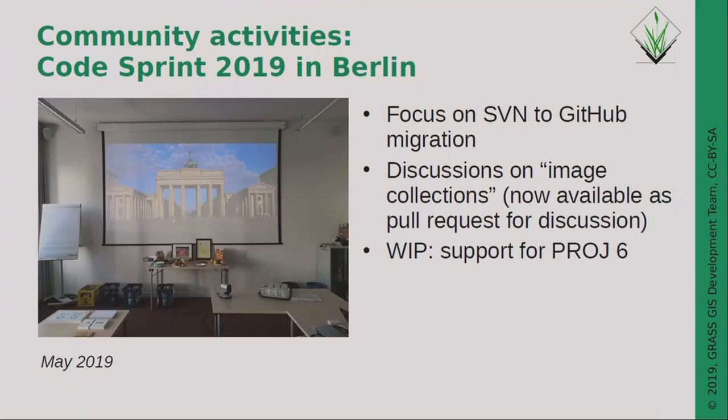This used to be an animation with the GRASS community sprint people — it's a PDF so nothing moves here. We have frequent code sprints; the next one is on Saturday, please come if you can. This time we focused on SVN to Git migration, and we also worked on so-called image collections — interesting for image processing. If you have multi-channel data like Sentinel or Landsat, you can treat it like a group of channels and know which number is which band.